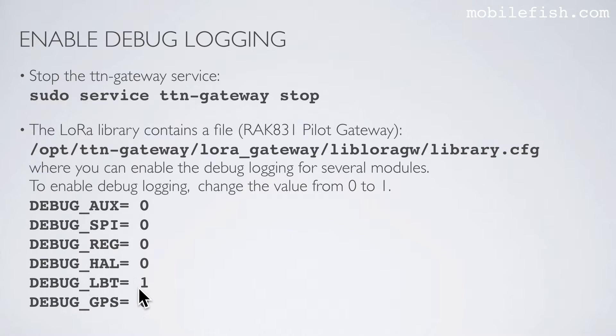Here is an example. By the way, the Rack A31 pilot gateway has no LBT feature.